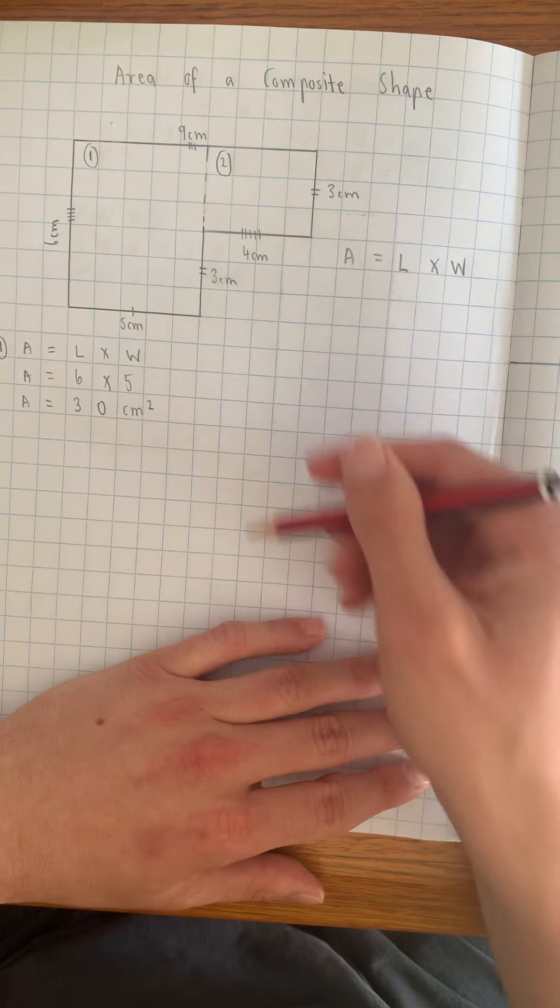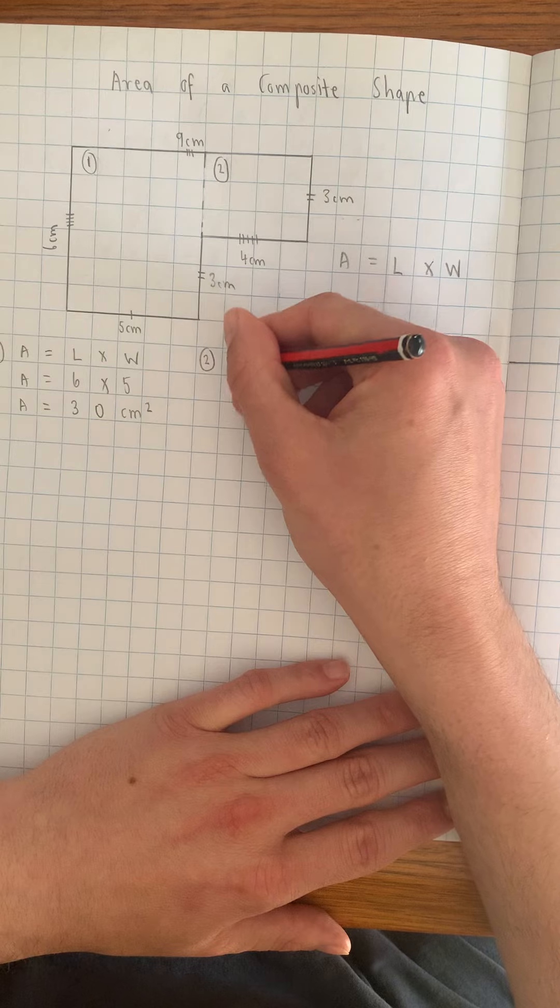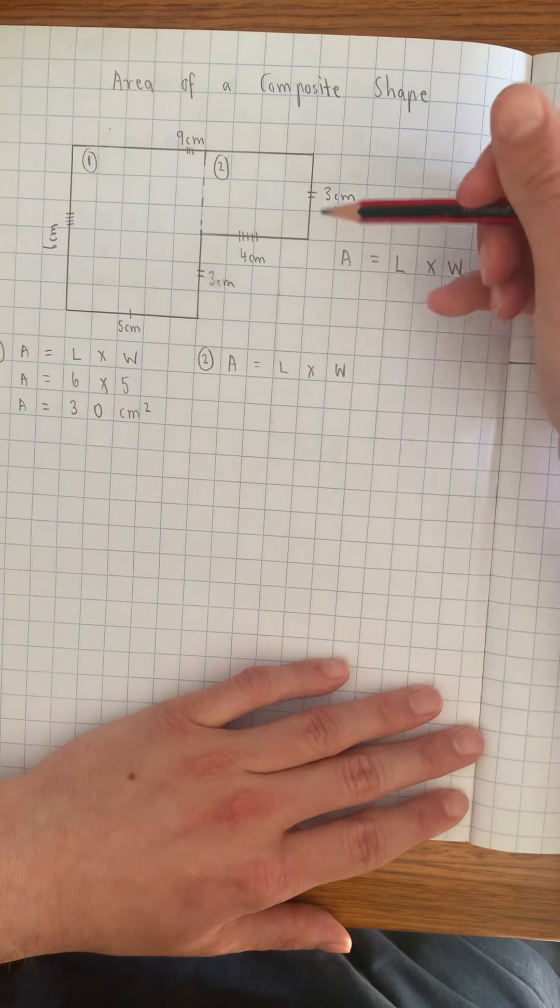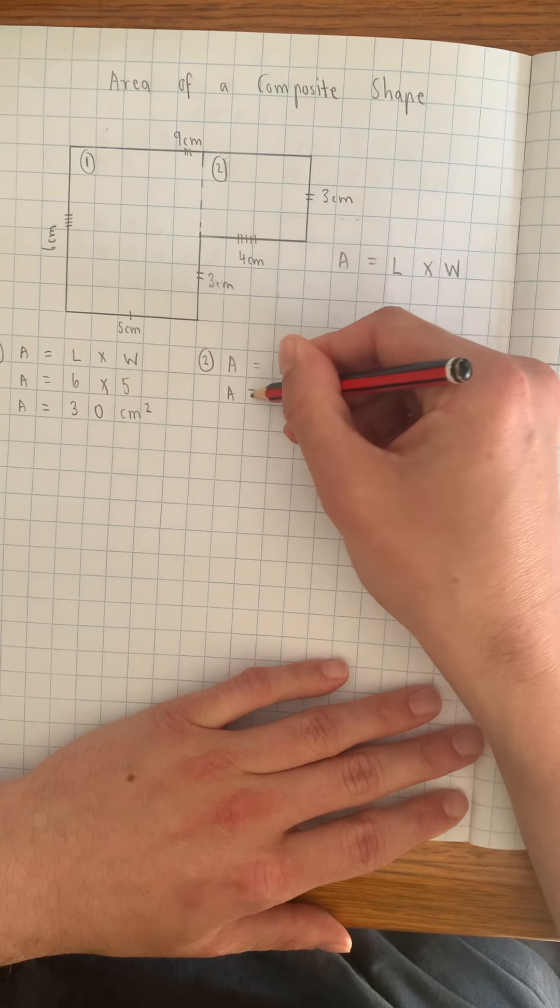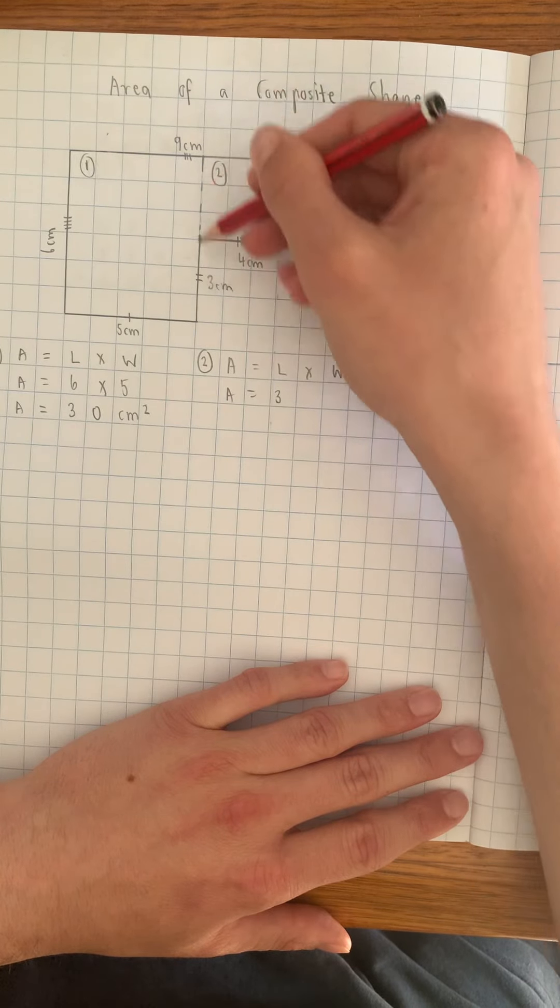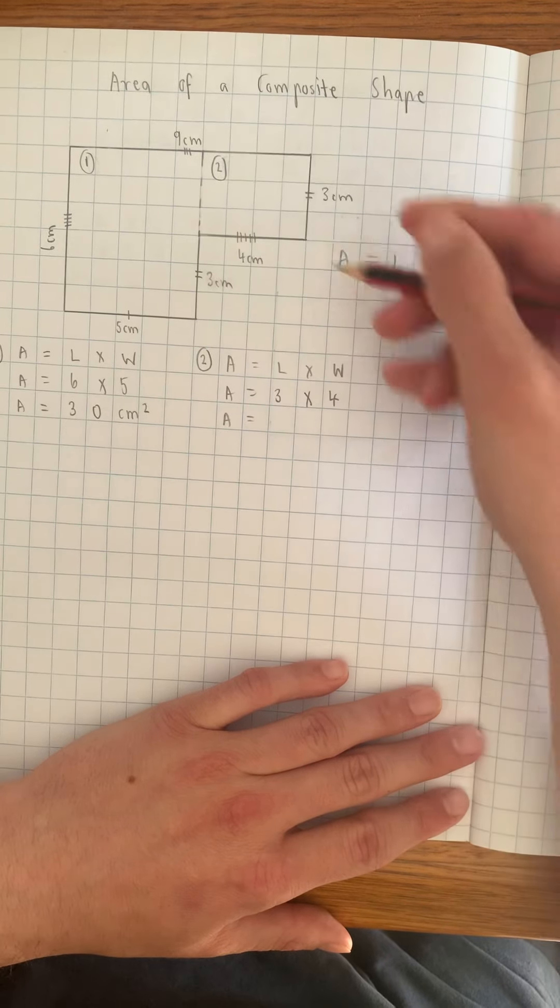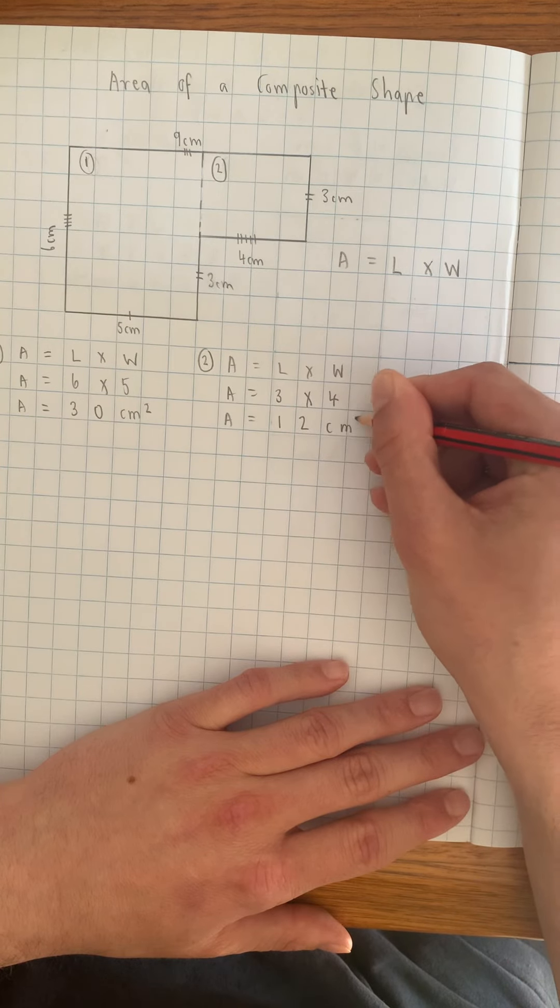So that's shape one. Next thing I'm going to do is look at shape two. So in shape two, again, we can do area equals length times width. And this time we have a length of three centimeters. It would be the same on this side. And the width is the four centimeters down here. So three multiplied by four. That means the area of this shape number two is 12 centimeters squared.